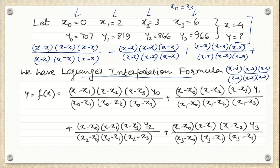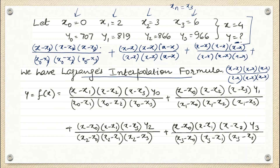In the first term's denominator, we write (x0 - x1)(x0 - x2)(x0 - x3), multiplied by y0. In the second term, the numerator is (x - x0)(x - x2)(x - x3) and the denominator is (x1 - x0)(x1 - x2)(x1 - x3), multiplied by y1. In the third term, the numerator is (x - x0)(x - x1)(x - x3), with x2 in the denominator. For the fourth term, we write (x - x0)(x - x1)(x - x2) in the numerator, with x3 in the denominator multiplied by y3.